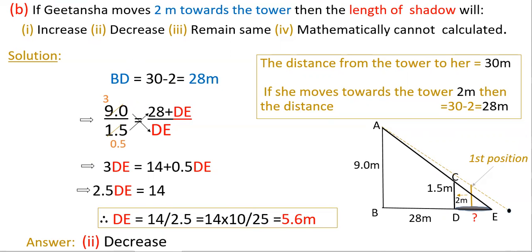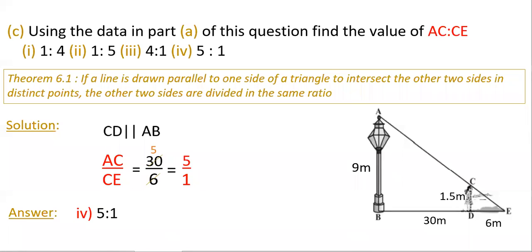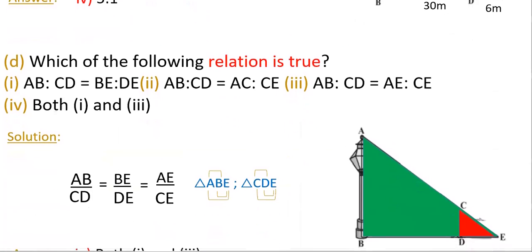The next question asks: using the data from part A, find the value of AC to CE. You have to apply Theorem 6.1 — if a line is drawn parallel to one side of a triangle to intersect the other two sides in distinct points, the other two sides are divided in the same ratio. Here CD is parallel to AB, so AC by CE equals BD by DE equals 30 by 6, which is 5 by 1. Therefore option 4, which is 5:1, is correct.